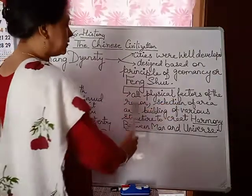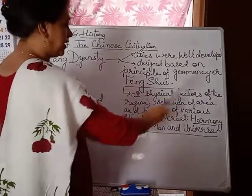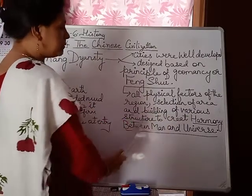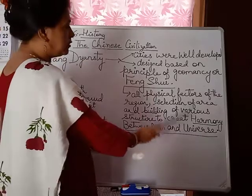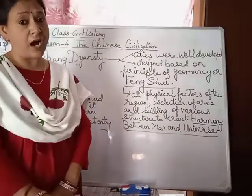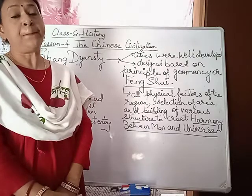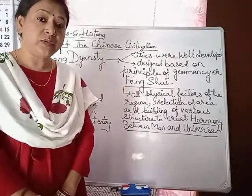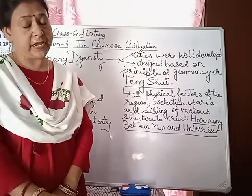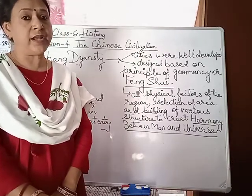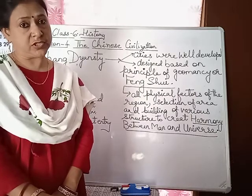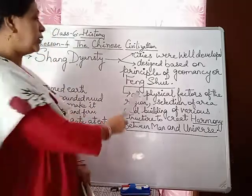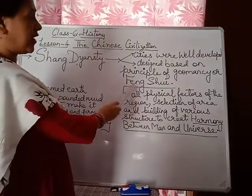All physical factors of the region were considered — the selection of area and building of various structures — to create harmony between man and universe. Feng shui is the art in which man is seen as connected with the universe, and buildings were designed according to a structure that helps maintain that connection.